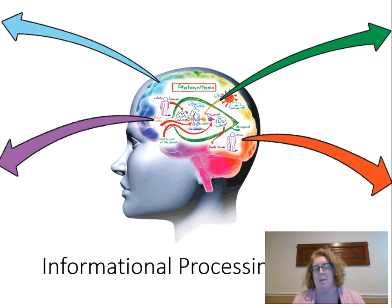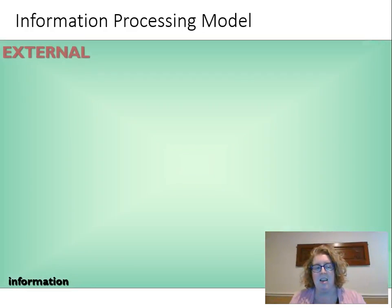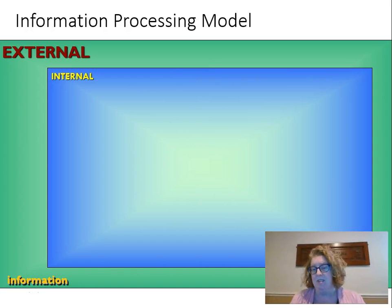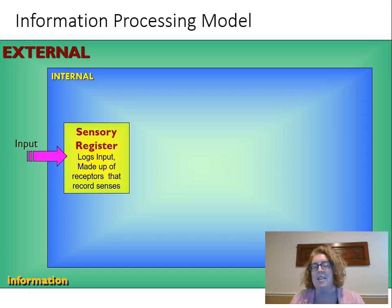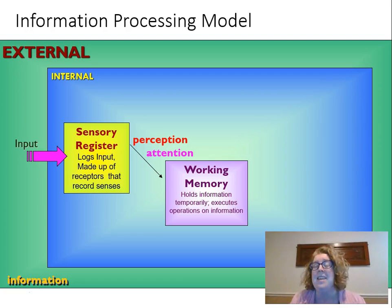The next model is the information processing model. Remember, it's a lot like a computer. We start off with information out in our environment — that's all external to us. We have our internal self, our frame of reference, with input coming in all the time. That goes to our sensory register — all of our receptors that record our senses: our eyes, ears, skin, nose. We're perceiving all of it but only attending to some of it.